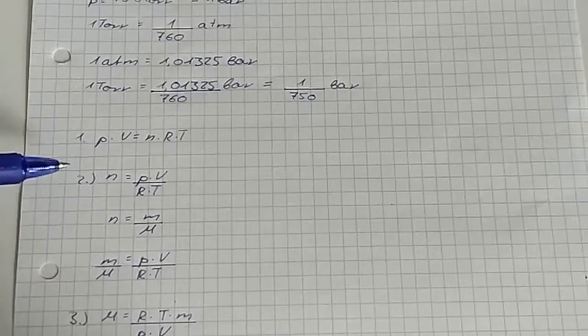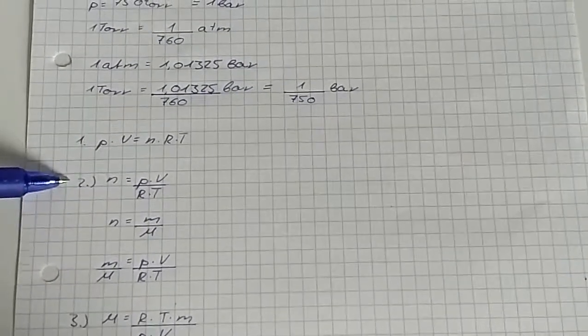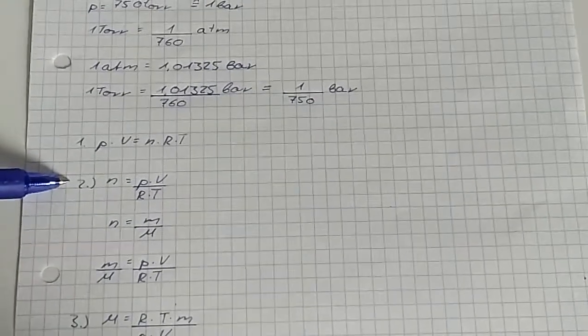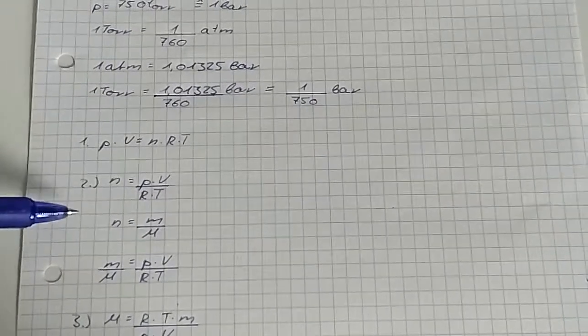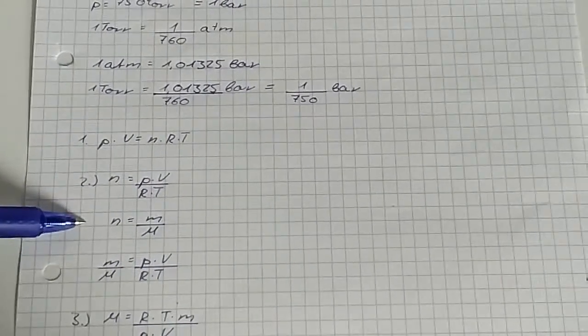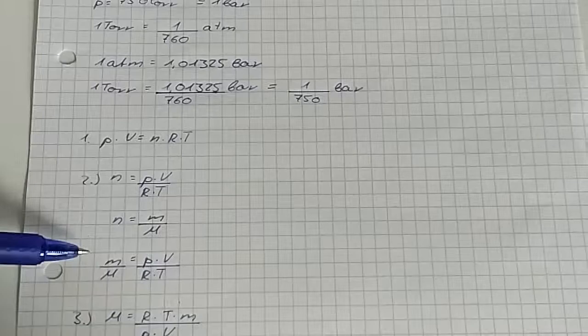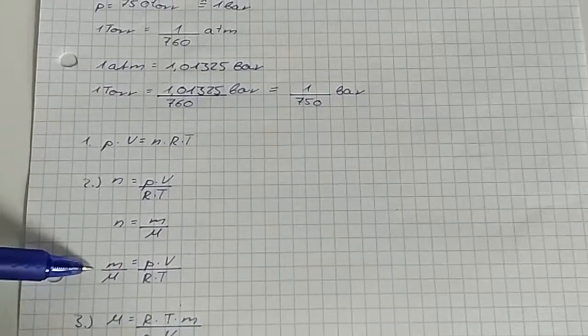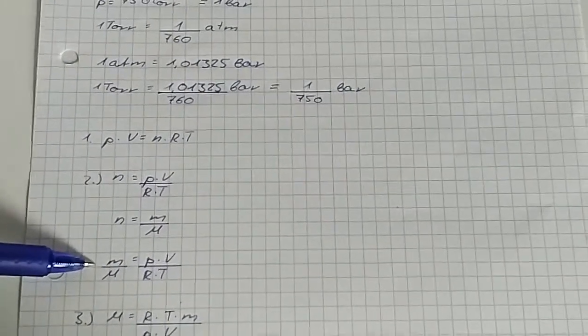Secondly, we convert the equation according to the quantity of matter. The amount of substance is the quotient of the mass and the molar mass. We also replace n by mass divided by molar mass.